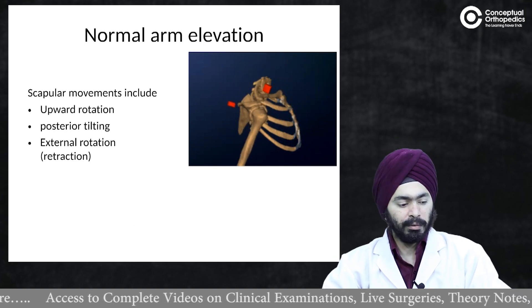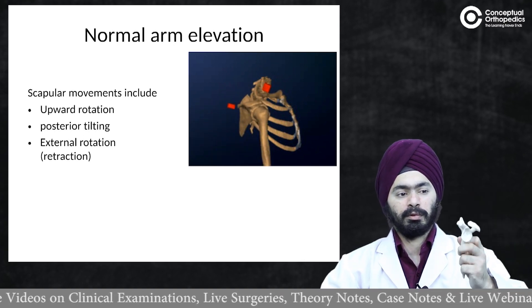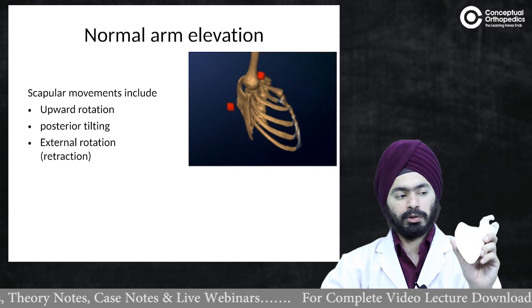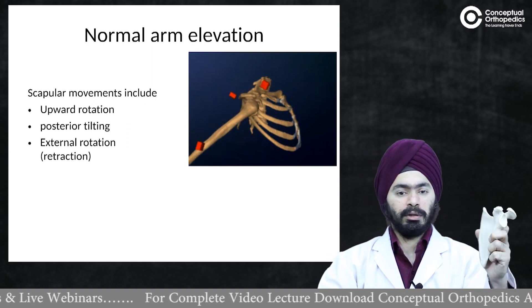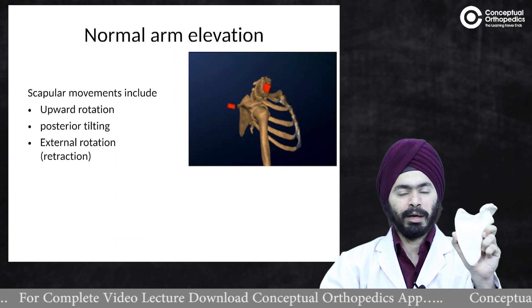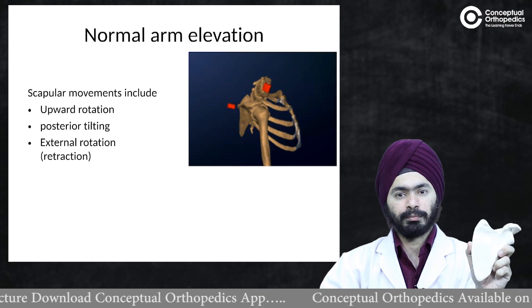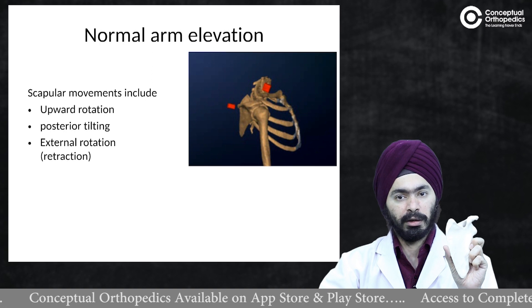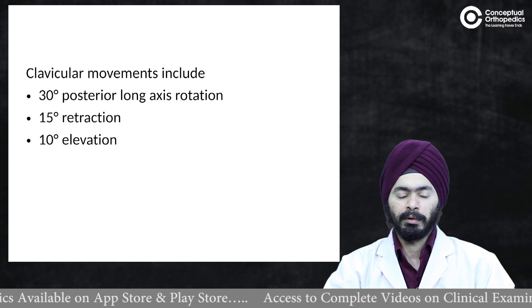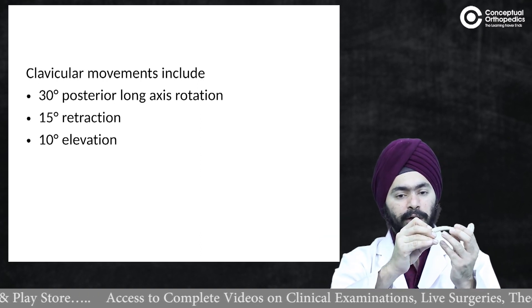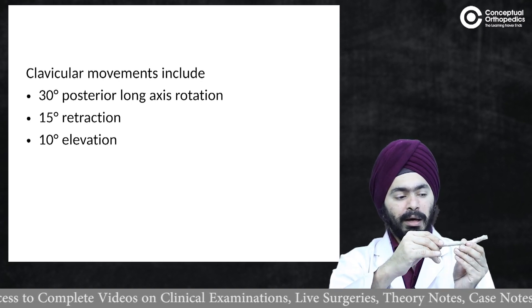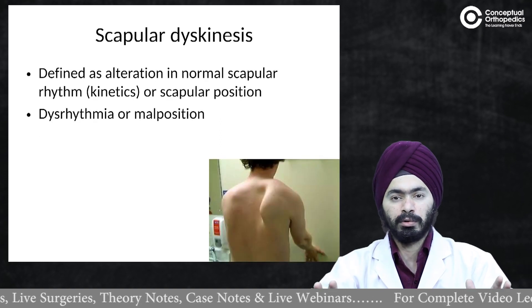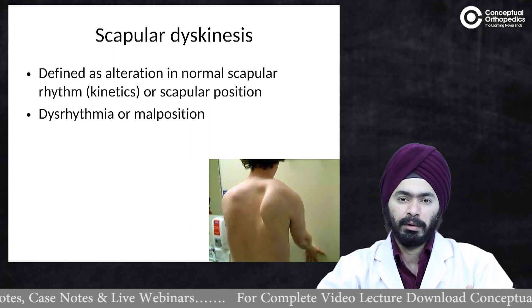During normal arm elevation, the scapular movements that occur are upward rotation, posterior tilt, and initially internal rotation, transitioning to external rotation at the end to complete full overhead movement. For the clavicle during overhead elevation, there is posterior rotation, retraction, and some amount of elevation. These are the clavicle and scapular movements that occur when the arm goes overhead. There is also something described as scapular dyskinesis, which we have discussed in other lectures.